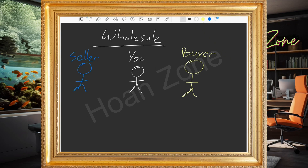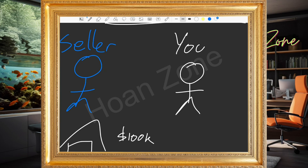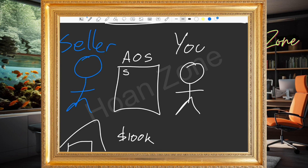Let's talk about wholesaling in more detail. There you are in the middle — you find someone who's looking to sell a property. Let's say that person has a house they want to sell for $100,000. You talk to them and say, hey, I would love to buy your house. They agree to $100,000. So between you two there is something called an agreement of sale.